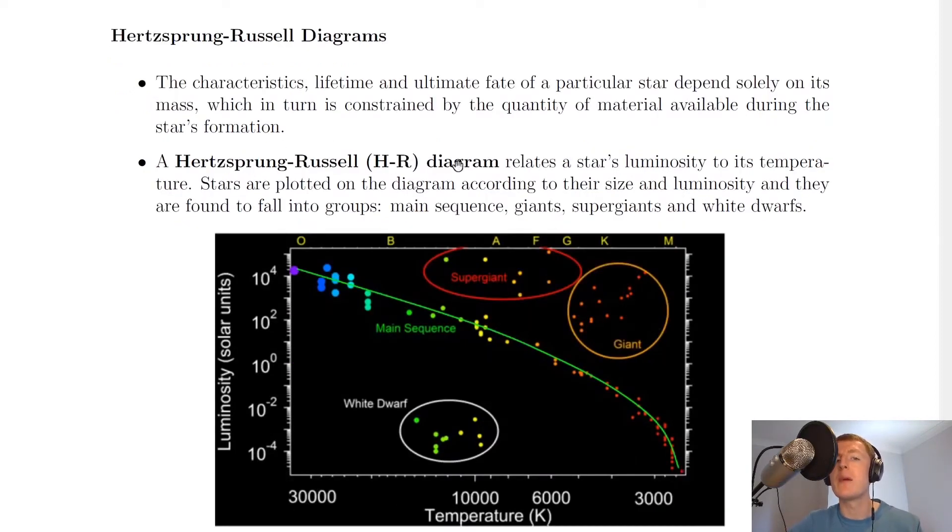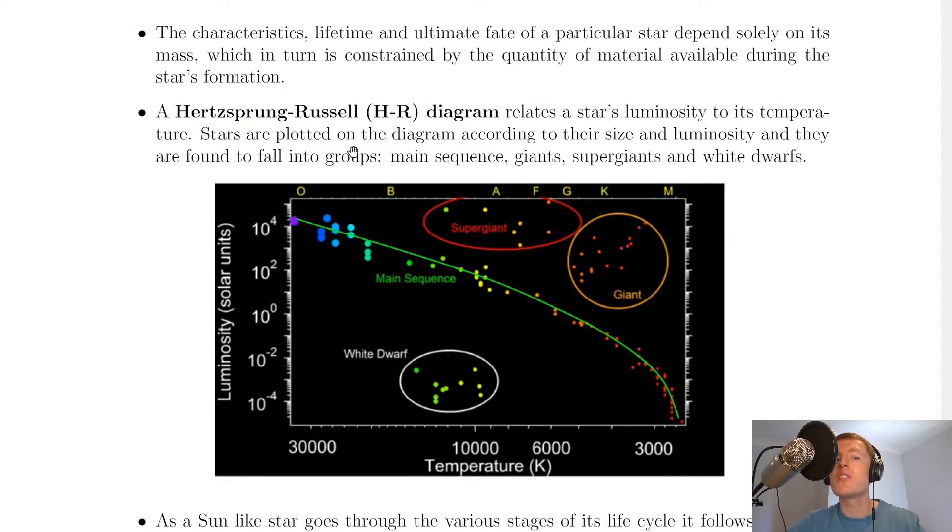A Hertzsprung-Russell diagram or HR diagram relates a star's luminosity to its temperature. Stars are plotted on the diagram according to their size and luminosity and they are found to fall into groups, namely the main sequence, giants, supergiants and white dwarfs.